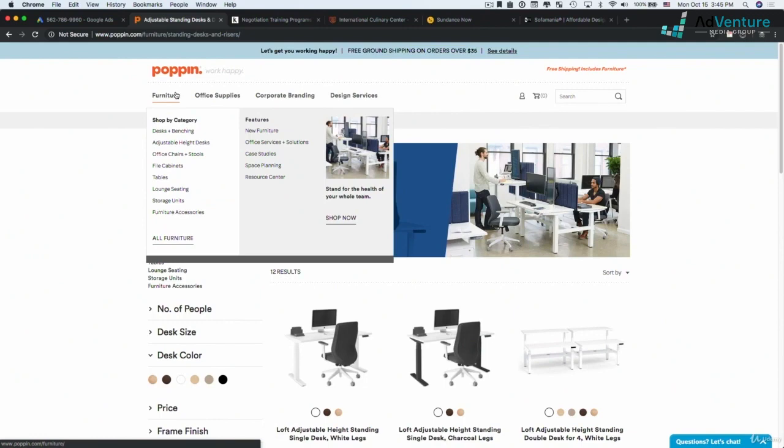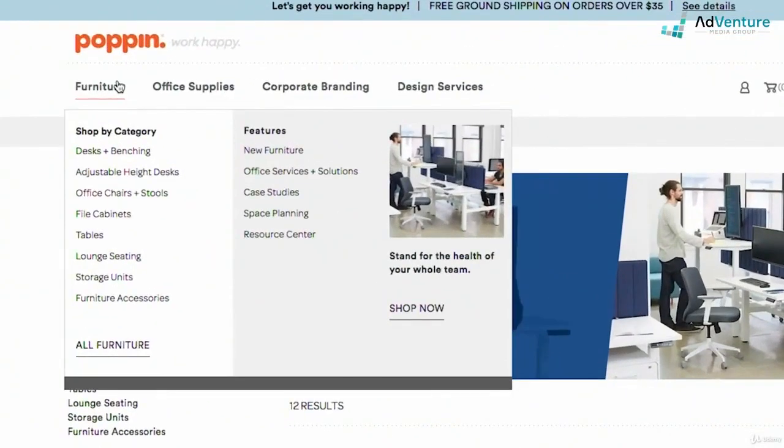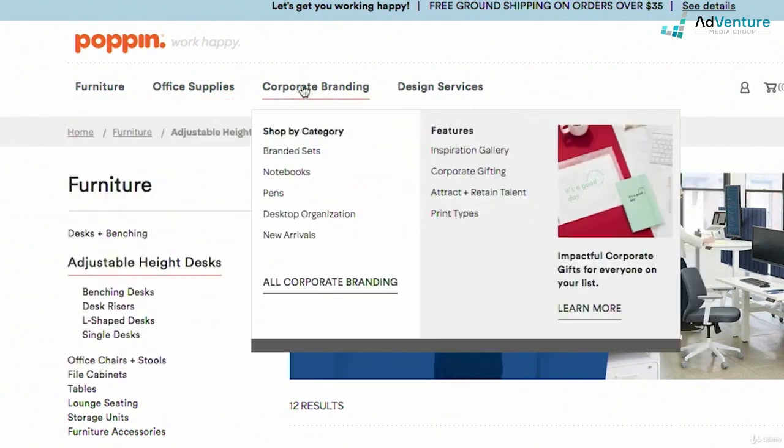There's two ways I would potentially break it out. I would have a top level campaign for furniture with ad groups below: ad groups for file cabinets, tables, lounge seating, and so on. I might have a campaign for corporate branding and then an ad group for branded sets, notebooks, pens, desktop organization, new arrivals.